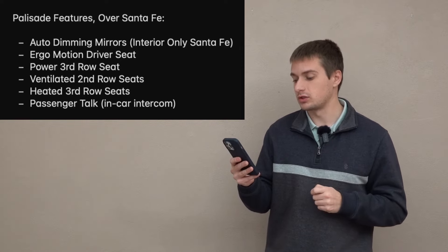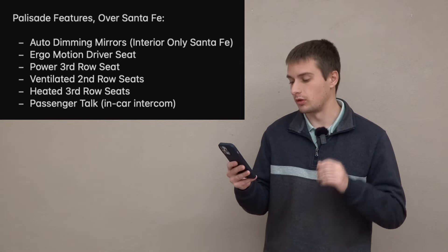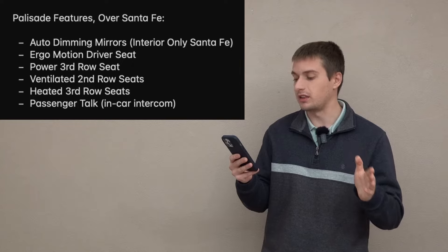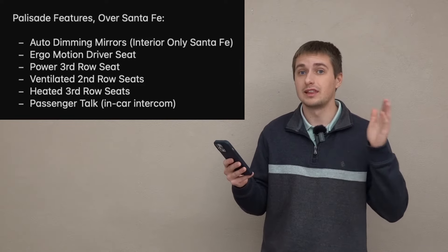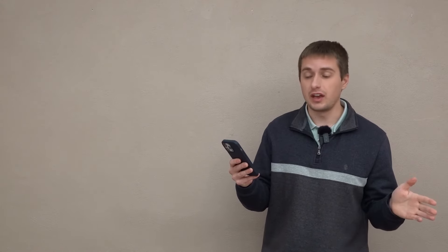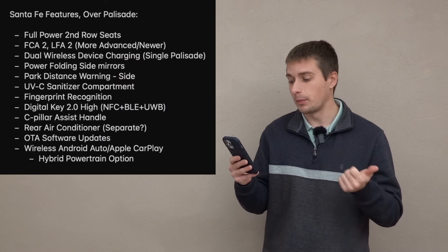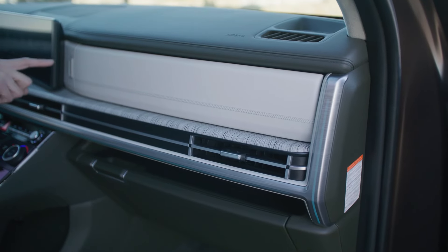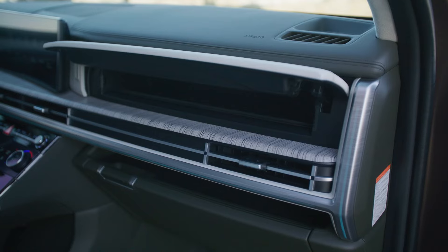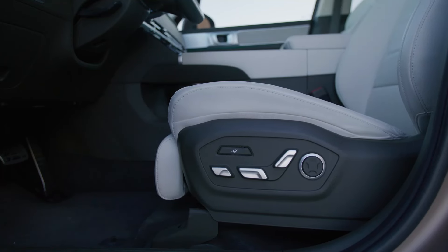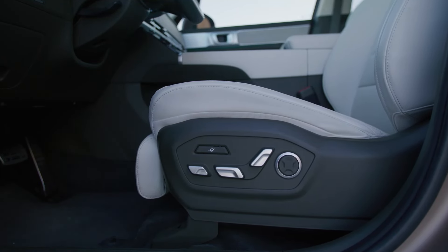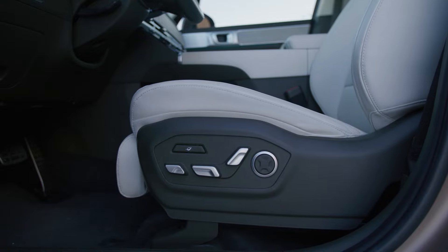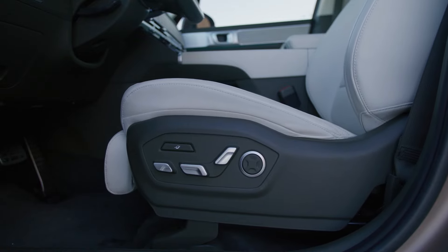Now finally, moving into the features that you're gaining in the Palisade over that of the Santa Fe, you're going to get auto-dimming mirrors for all three mirrors, so both side mirrors and the interior mirror versus only the interior mirror in the Santa Fe. You get the Ergo Motion driver seat, power folding third row seats, ventilated second row seats, heated third row seats, and finally Passenger Talk with the in-car intercom. So those are all the features I was able to find that you're getting in the Palisade Calligraphy that you will not get in the Santa Fe.